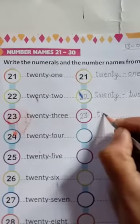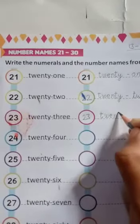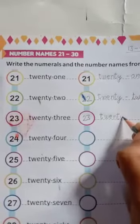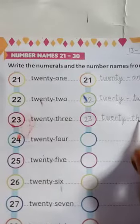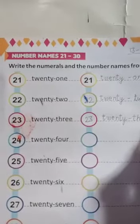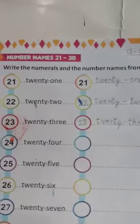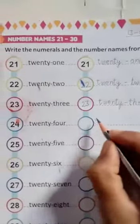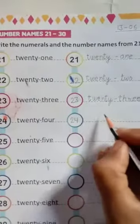23: T-W-E-N-T-Y, 20, T-H-R double E, 3, 23. Next 24: T-W-E-N-T-Y, 20, F-O-U-R, 4, 24. Next 25.